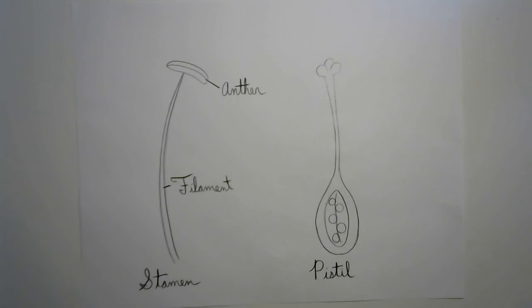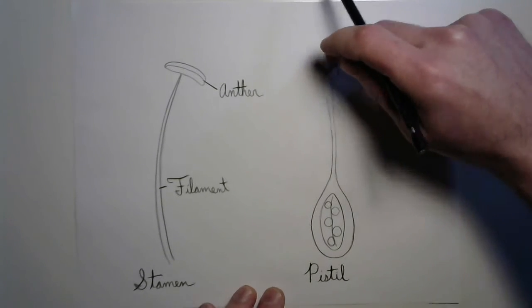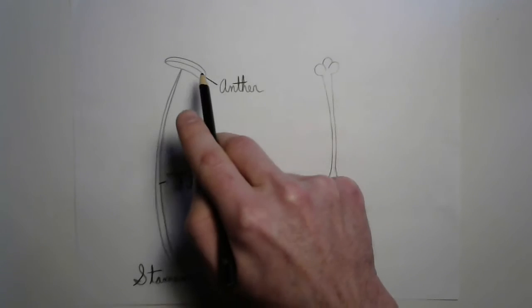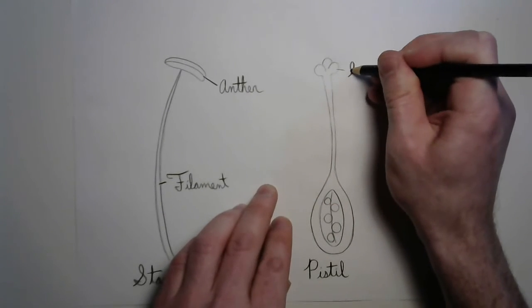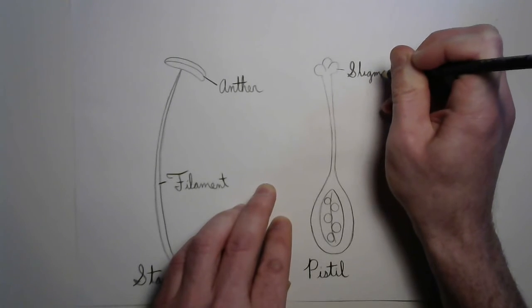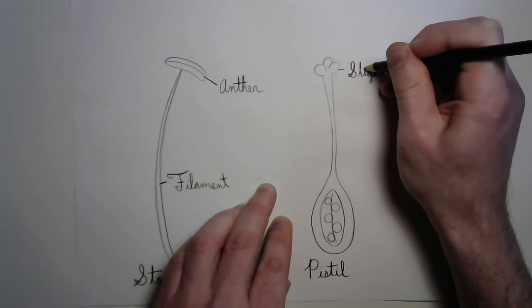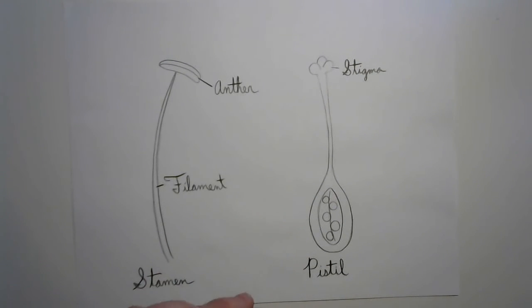Let's talk about that pistil. Look at it. And remember, the top part of the pistil is sticky, right? So that the pollen can be caught. That is called the stigma, the sticky stigma. Stigma is a Greek word for a mark made by a point.